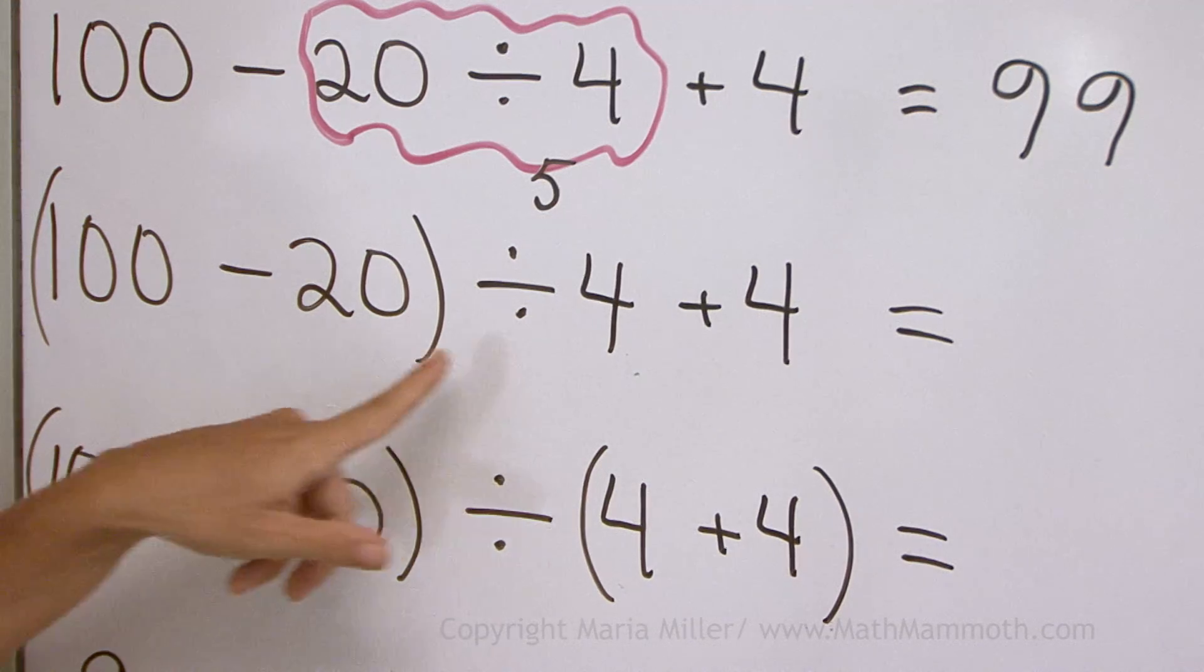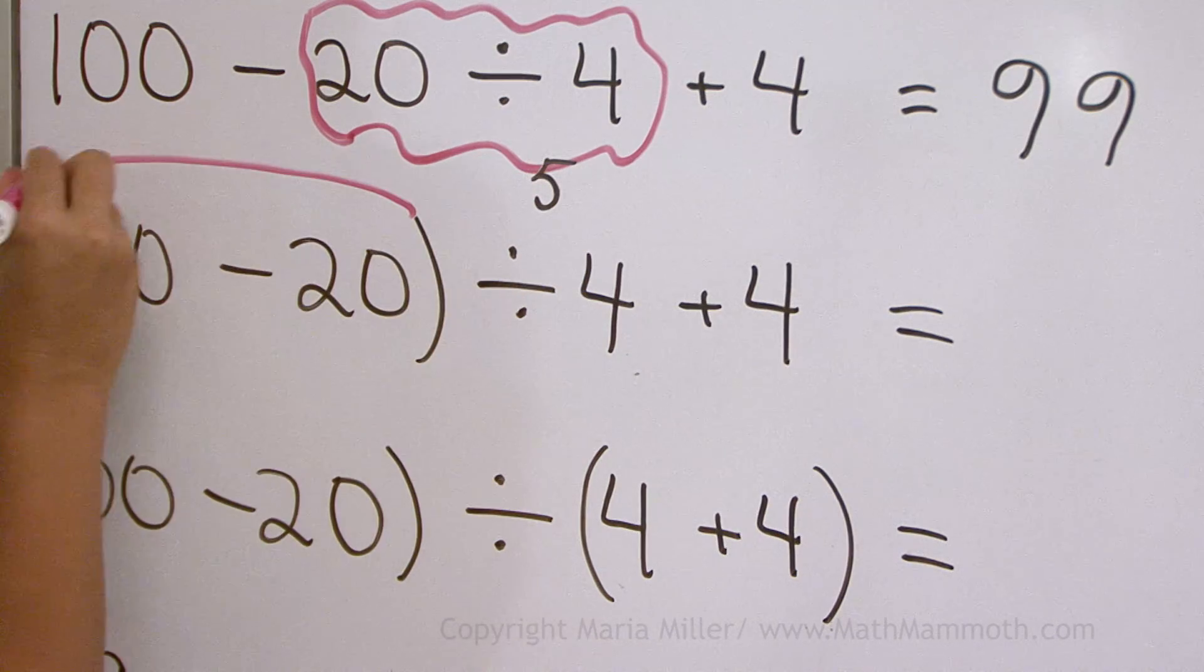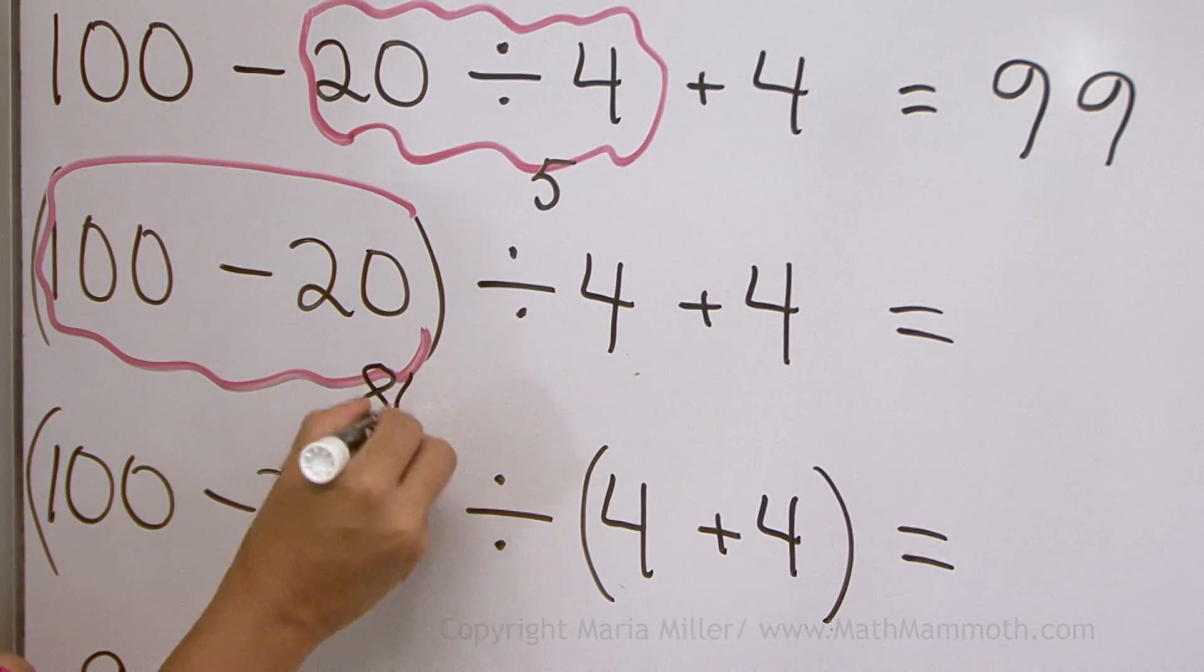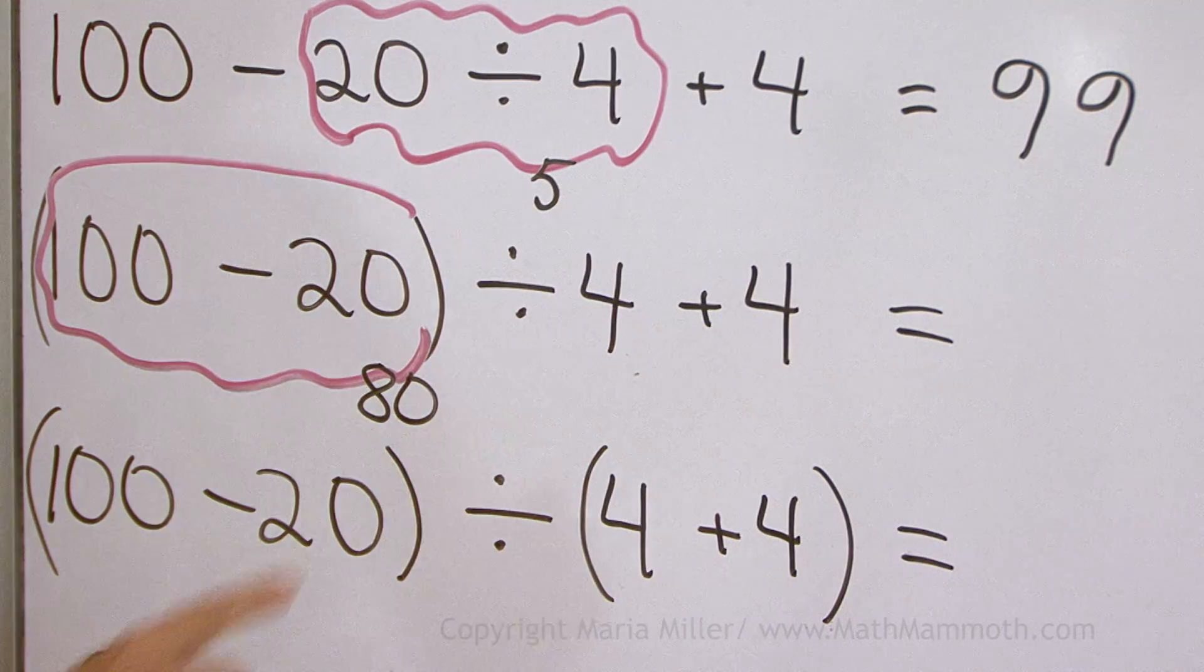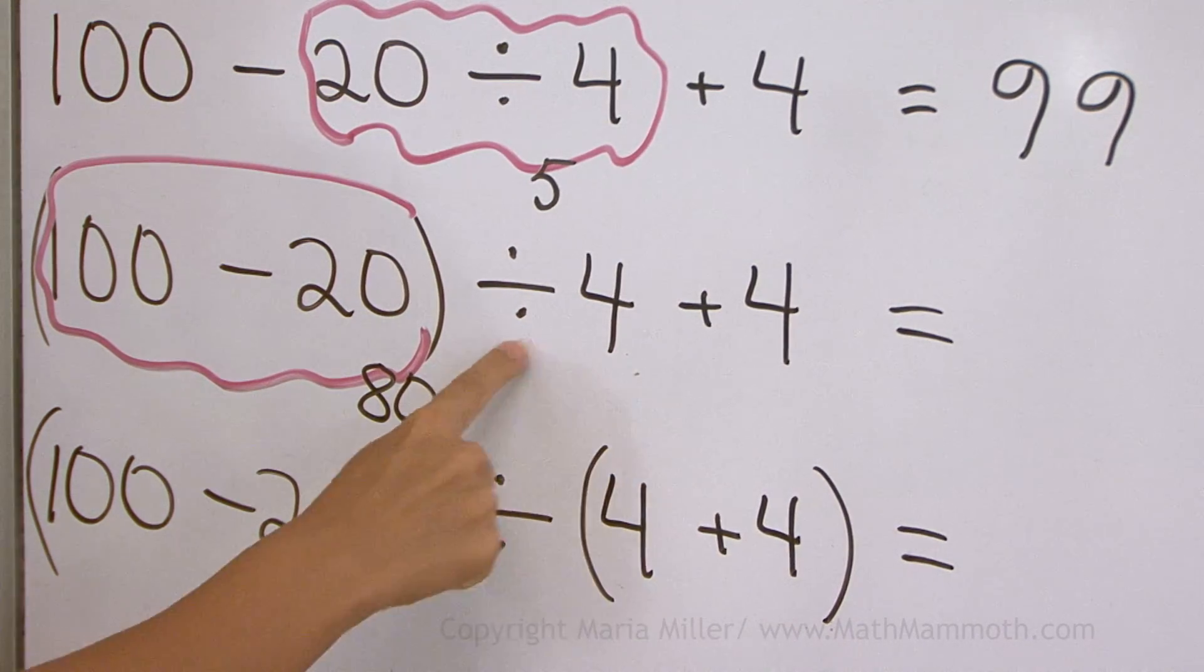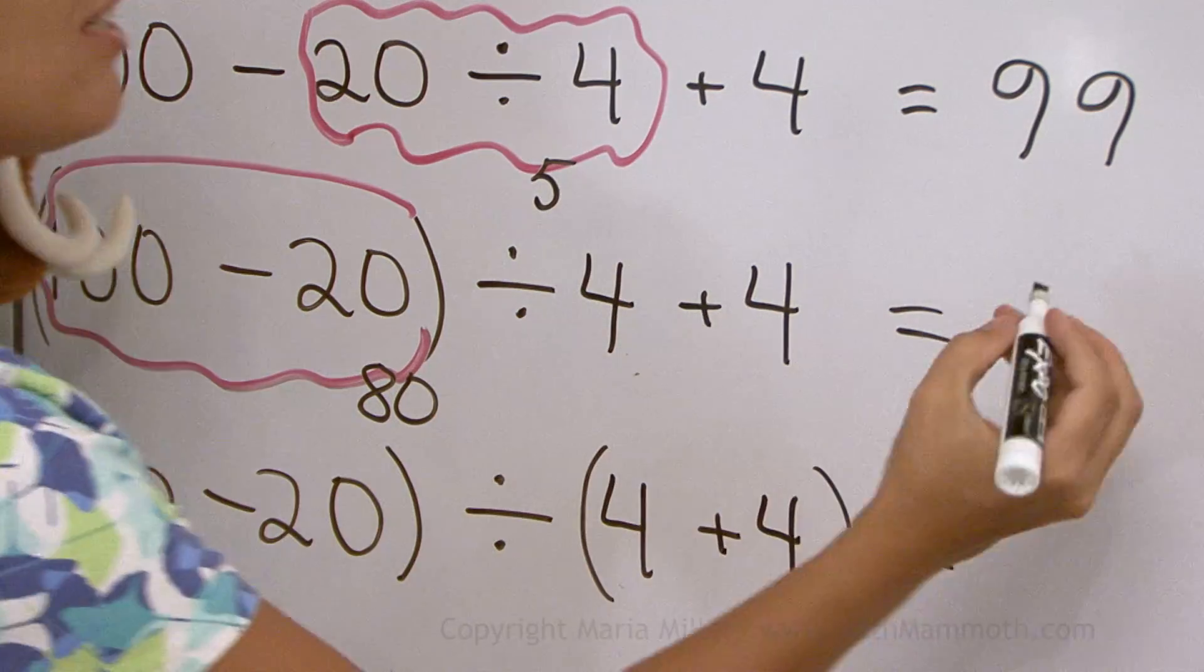100 minus 20 divided by 4 plus 4. Now what first? Parenthesis. We need to subtract first. So that's 80. And then division, addition. Divide first. 80 divided by 4. That's 20. And then lastly add 4. 24.